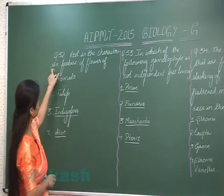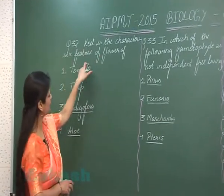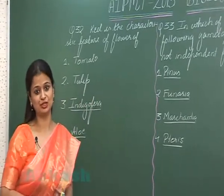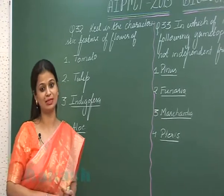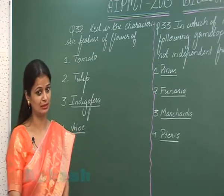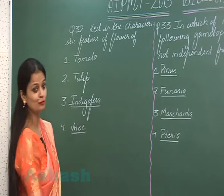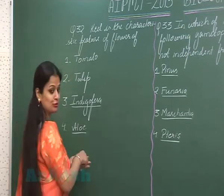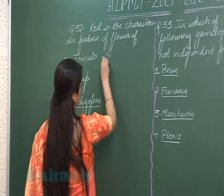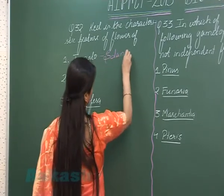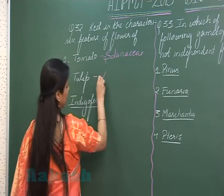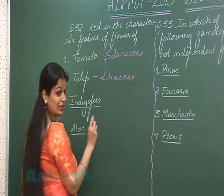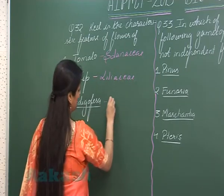In question number 32, keel is the characteristic feature of which flower? Keel is a characteristic feature present in members of the Fabaceae family. So we have to look for the member which belongs to Fabaceae family. Tomato belongs to Solanaceae family, Tulip belongs to Liliaceae family, and Indigofera belongs to Fabaceae family.